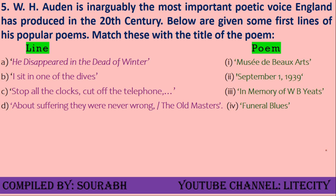Question five: W.H. Auden is inarguably the most important poetic voice England produced in the 20th century. Match these first lines to their poems. 'He disappeared in the dead of winter.' 'I sit in one of the dives.' 'Stop all the clocks, cut off the telephone.' 'About suffering, they were never wrong, the old masters.' The poems to match are: September 1st 1939, In Memory of W.B. Yeats, Musée des Beaux Arts, and Funeral Blues.